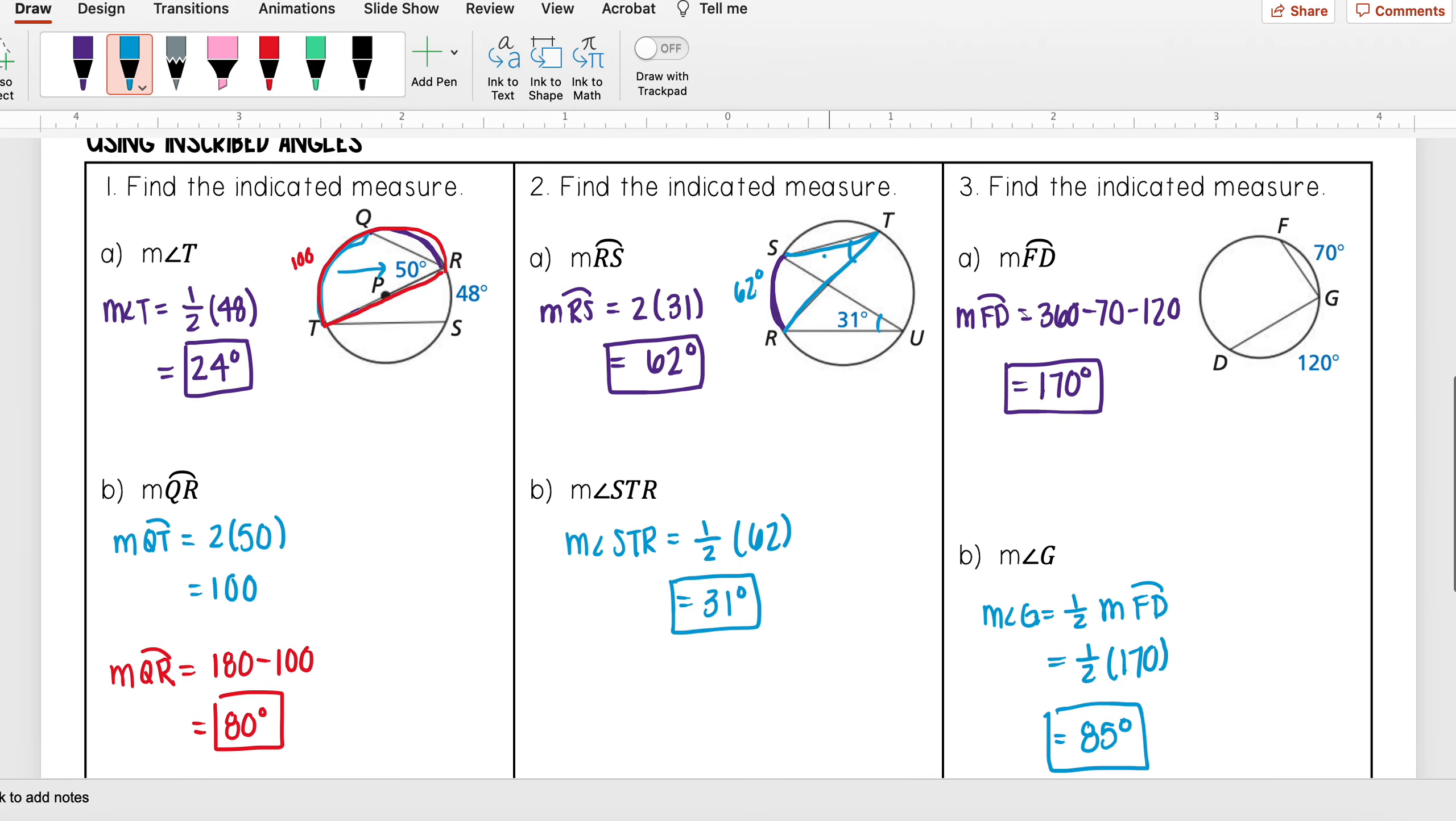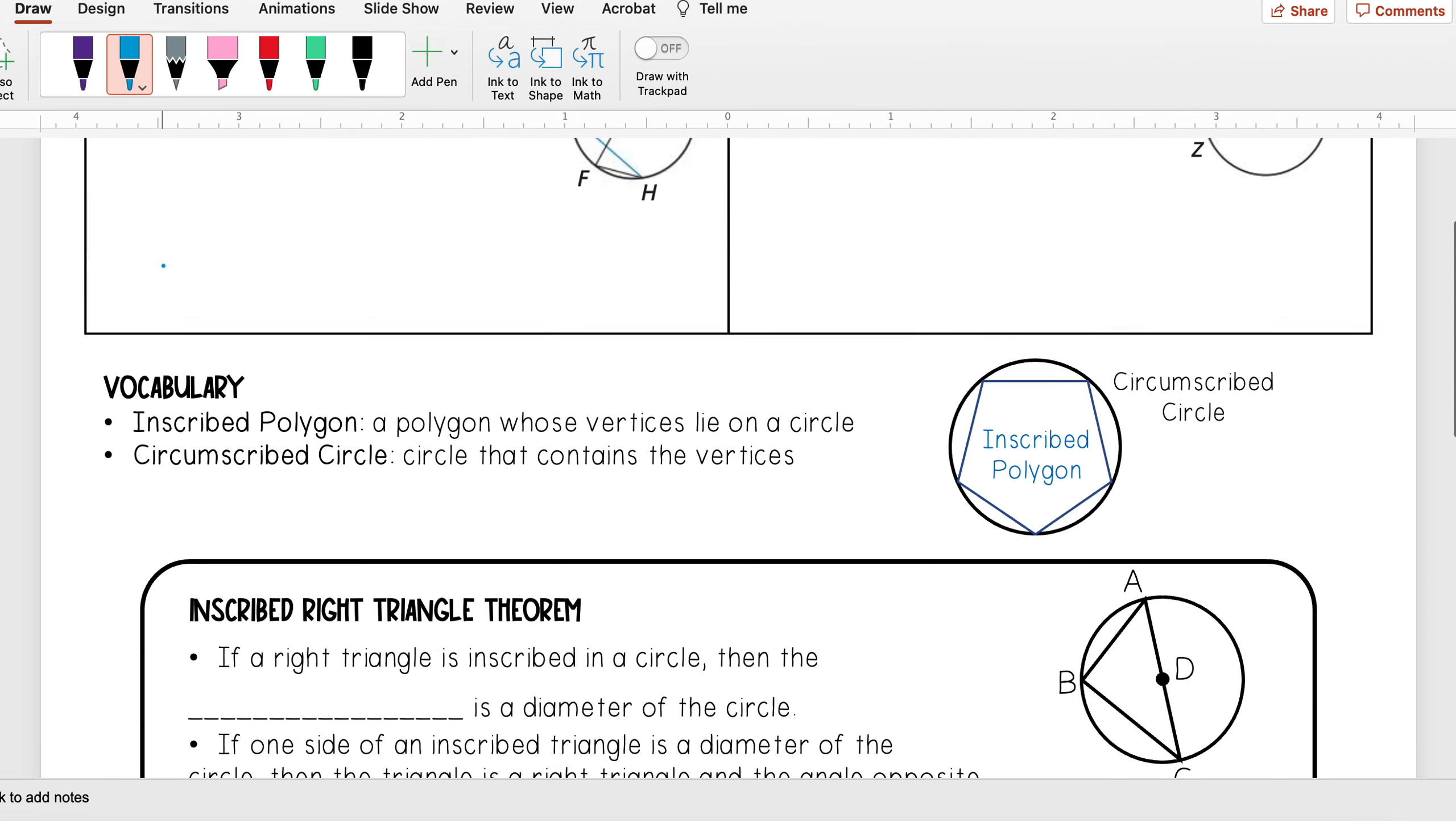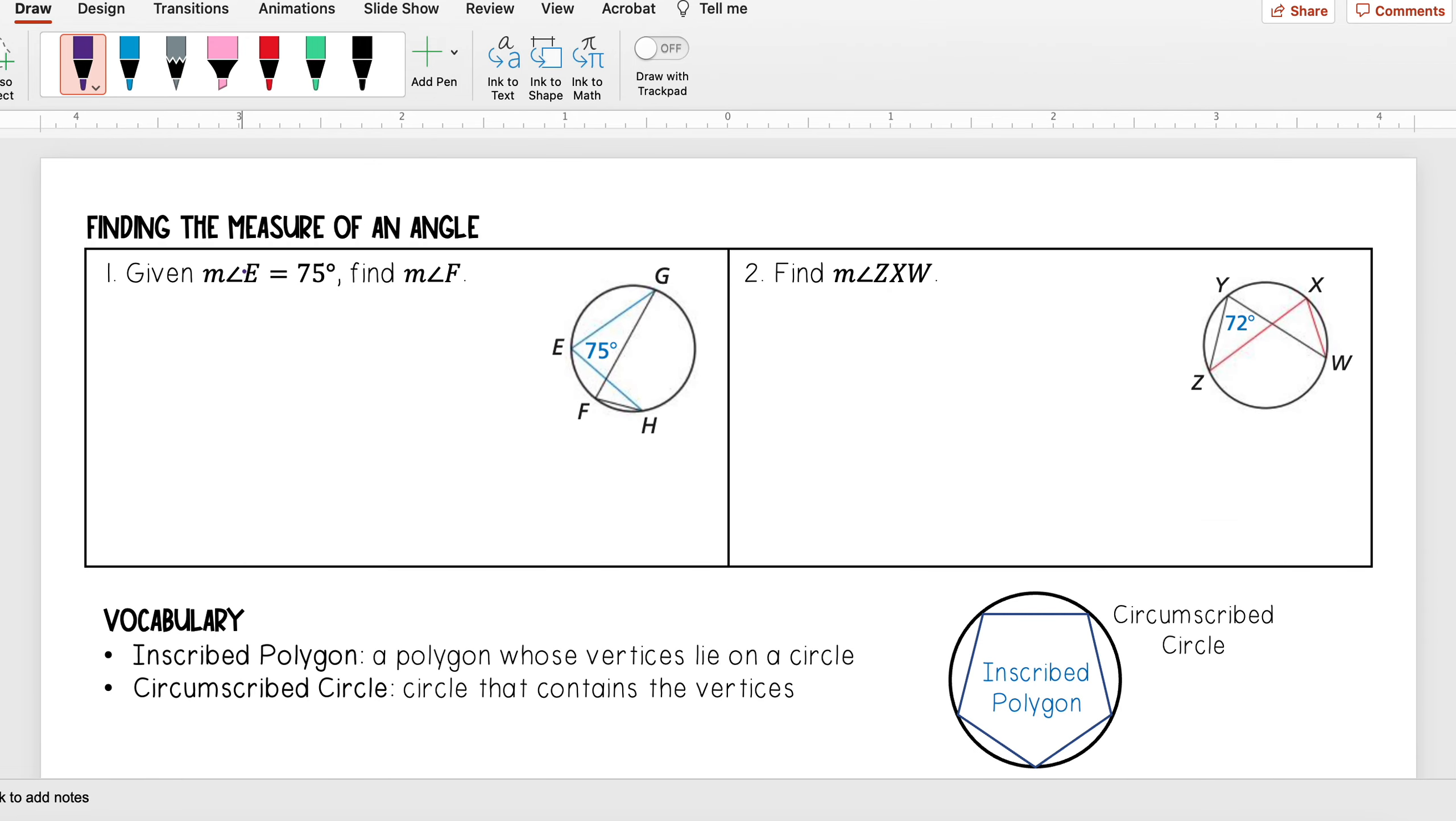We notice that in our previous example, these two angles intercepted the same arc, so they ended up being congruent. Let's go through a couple of examples. I see the measure of angle E is equal to 75 degrees, and I want to find the measure of angle F. I see that angle E intercepts this arc GH.